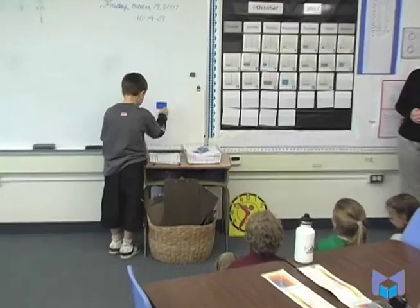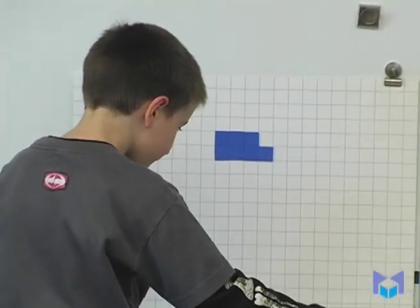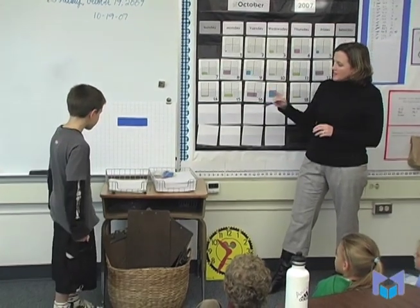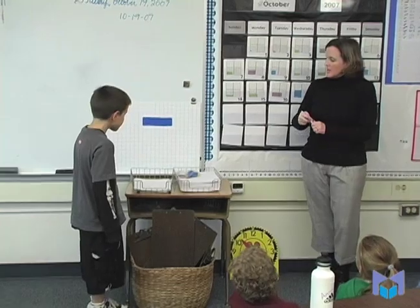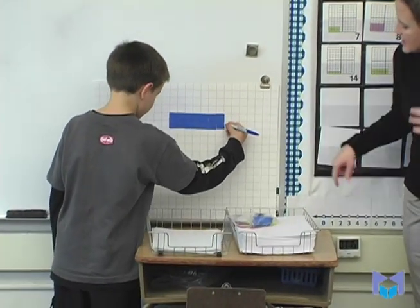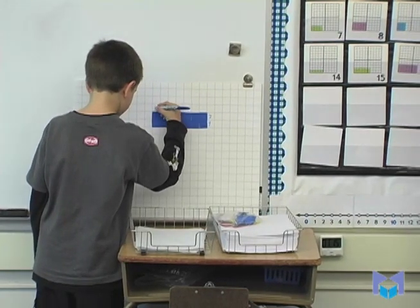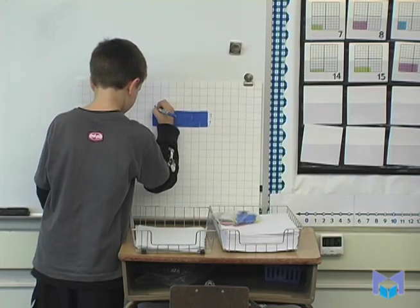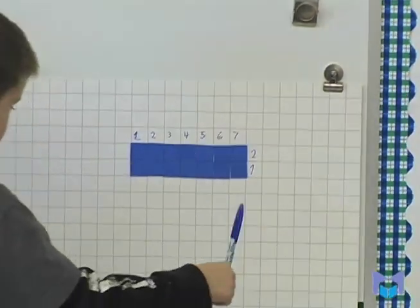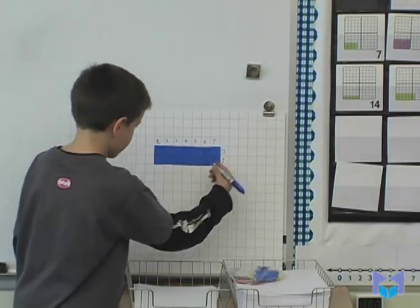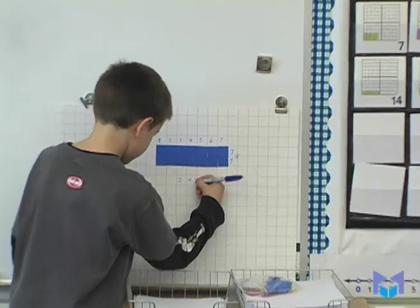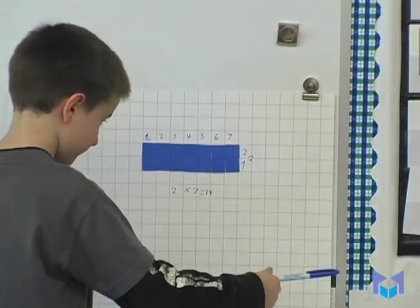Anthony, will you please mark the dimensions on the array — how many is your height and what's the length? Good. So how many up do you have? Two. And how many over do you have? Seven. Excellent, good job.